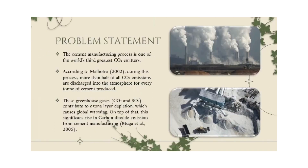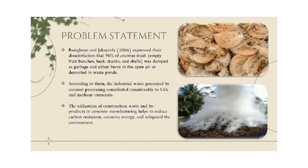Moving on to the problem statement of this study. The cement manufacturing process is one of the world's third greatest CO2 emitters. According to Malhotra, during this process more than half of all CO2 emissions are discharged into the atmosphere for every ton of cement produced. These greenhouse gases such as CO2 contribute to ozone layer depletion which causes global warming. Additionally, 90% of coconut waste such as its empty fruit bunches, husks, trunks and shells was dumped as garbage and either burned in the open air or deposited in waste ponds. The industrial waste generated by coconut processing contributes considerably to CO2 and methane emissions.